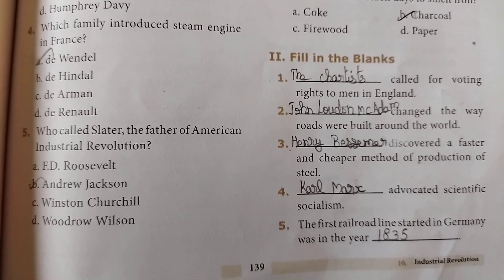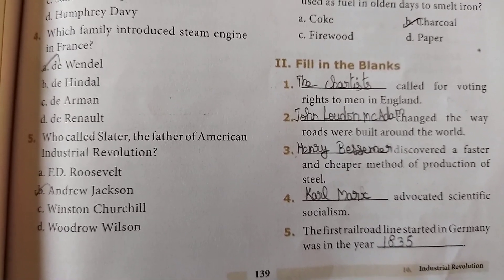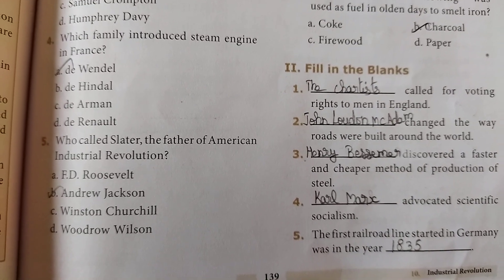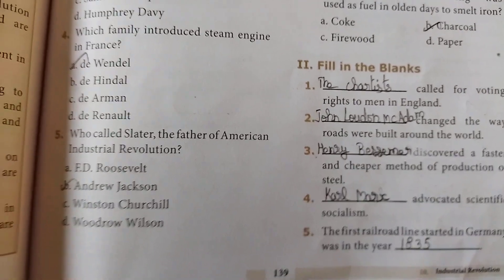Fifth one: the first railroad line started in Germany was in the year 1835.